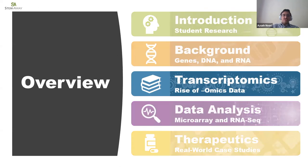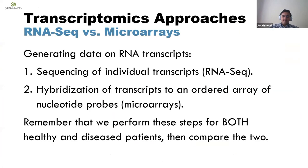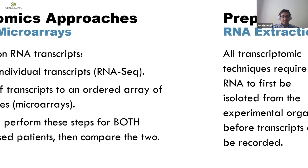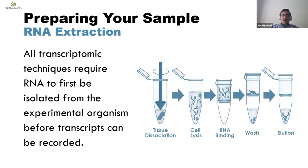Let's move on to section three: transcriptomics. We're going to cover two techniques to generate transcript expression data — DNA microarrays and RNA-seq. You can generate data on RNA transcripts via two main principles: you can sequence individual transcripts (the RNA-seq approach), or you can hybridize transcripts to an ordered array of nucleotide probes. All transcriptomic methods require RNA to first be isolated from the experimental organism before we can measure expression levels — we're trying to isolate the transcriptome of a specific cell line in the patient we're interested in.